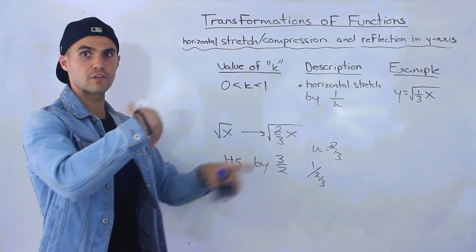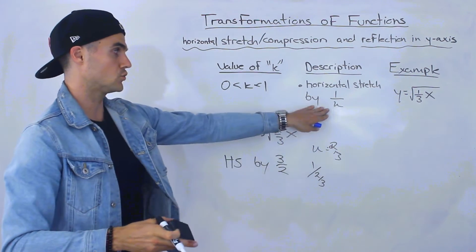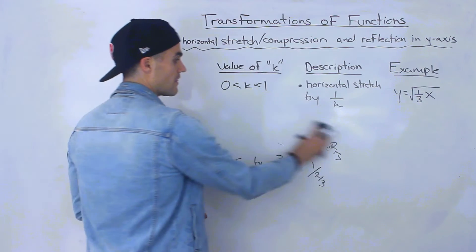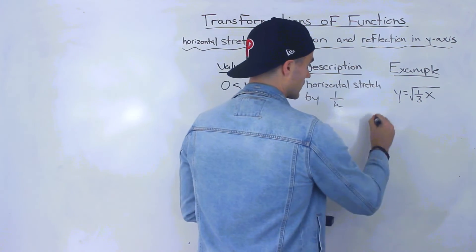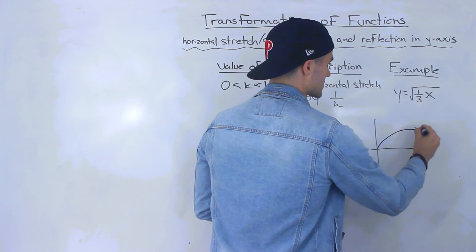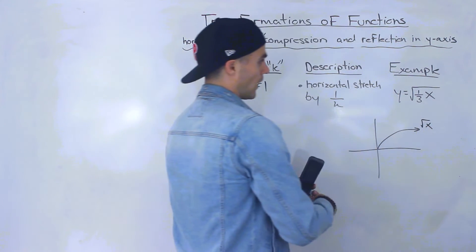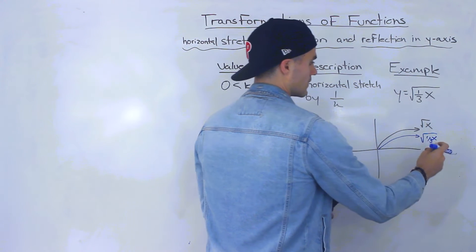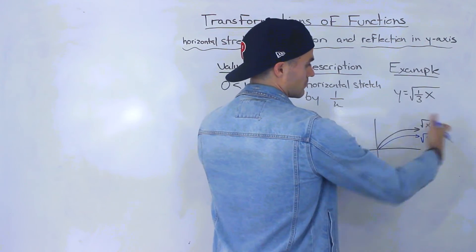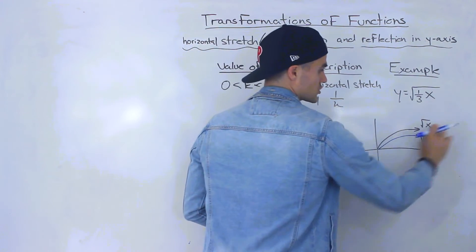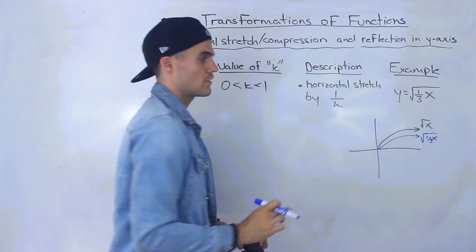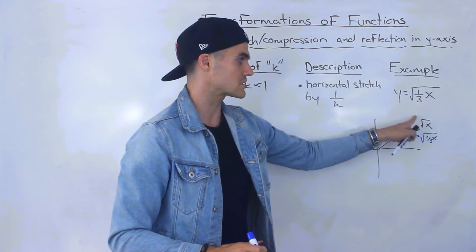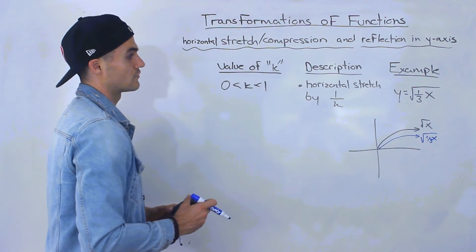Just remember: whatever the k value is, you flip it when describing the transformation. Graphically, if we graph the square root of x, then the square root of (1/3)x is horizontally stretched by a factor of 3 — taking the original and stretching it out. That's how the square root of (1/3)x looks compared to the square root of x.